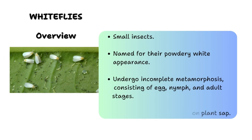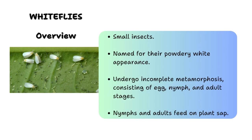Briefly looking at the overview of whiteflies: whiteflies are small sap-sucking insects that are known for their powdery white appearance and resemblance to very tiny moths. Whiteflies are commonly found in warmer temperatures or warmer climates and are very notorious agricultural pests, feeding on the sap of a wide variety of plants including vegetables, ornamentals and fruit trees.